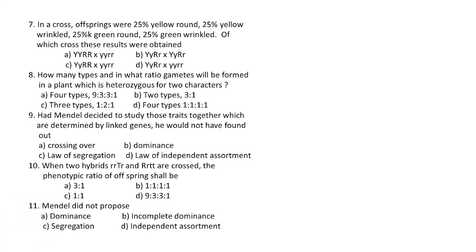Question 52: in a cross, offspring were 25 percent yellow round, 25 percent yellow wrinkled, 25 percent green round, and 25 percent green wrinkled. Which cross produced these results? The ratio is 1:1:1:1, which is a standard dihybrid test cross ratio.